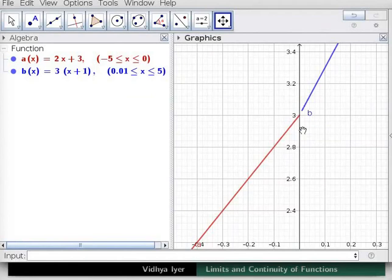When x tends to 0, f of x is 3 as the function intersects the y-axis at 0,3. The blue function has to be considered for x greater than 0.